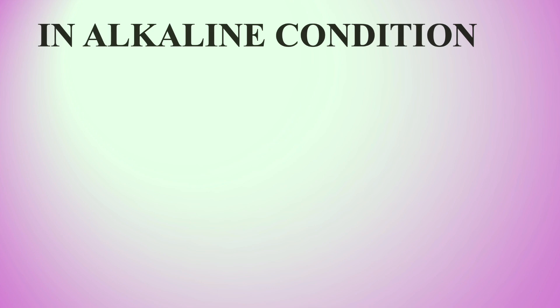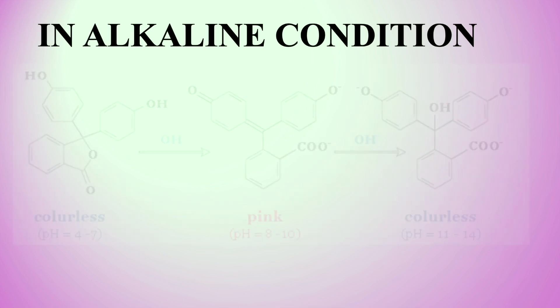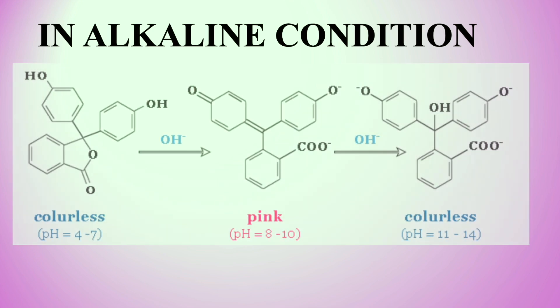The quinonoid form exists in basic conditions where protons are not present on the functional group. It is the oxidized form, which is pink in color in an alkaline environment. However, in the presence of excess alkali at higher pH, phenolphthalein becomes colorless due to destruction of the quinonoid structure by nucleophilic attack of the hydroxyl group.